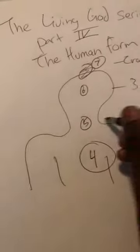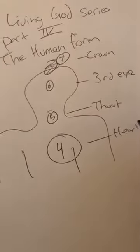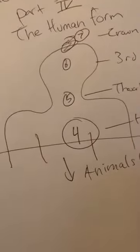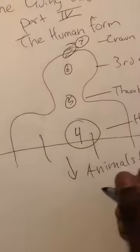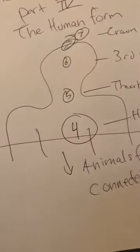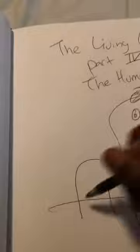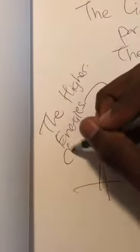Alright, so on the last one we said that anything lower than four and down are part of the animal ones, animal form, which is connected to the earth. Alright, so now we're going to talk about stuff that's above it, the higher energies and chakras.